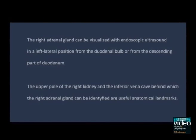The upper pole of the right kidney and the inferior vena cava can be found as landmarks for the right adrenal gland. The right adrenal gland is more visible in a percutaneous ultrasound examination in a slightly left lateral position.